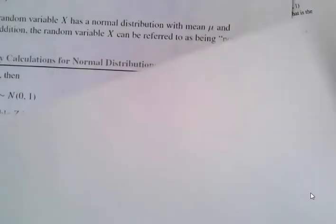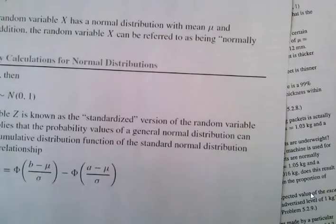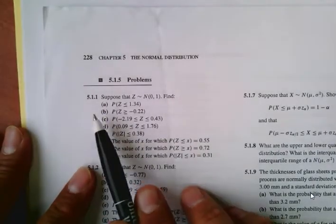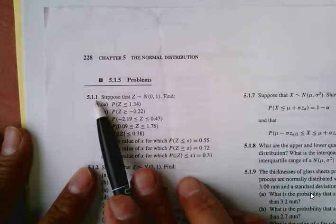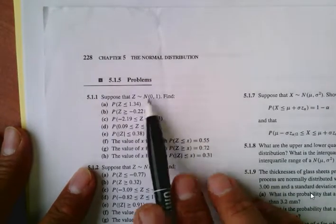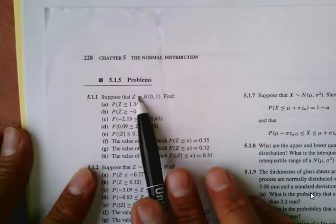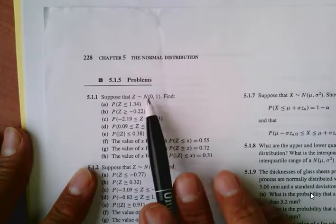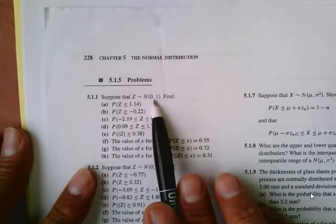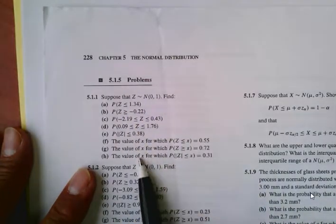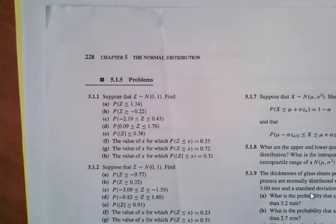Now let's work on some exercises from the textbook. Let's look at exercise 5.11. The first question: suppose we have variable Z that follows a normal distribution with parameters 0 and 1 — since we see 0 and 1, we know this is the standard normal — so we just need to look up the information on the table.